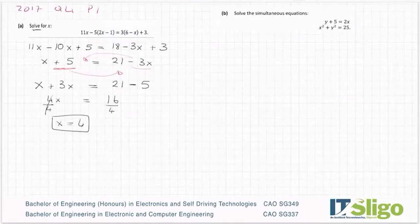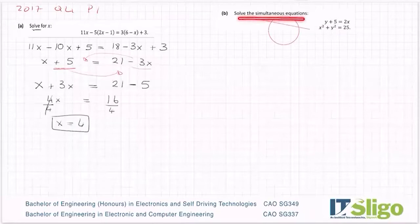Part B. Solve the simultaneous equations y plus 5 equals 2x. x squared plus y squared is equal to 25. You may have the line and the coordinate geometry, the line and the circle done. And you might recognize that that is a circle with center 0, 0 and radius 5. If you don't recognize that, that's okay. You don't need to know that per se. And this equation on top is a line. So what I have up here is some sort of a circle and some sort of a line going through it.